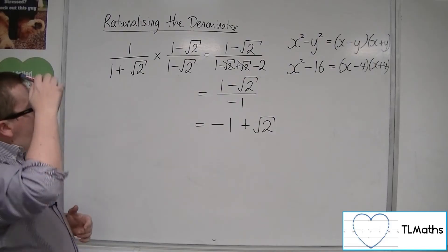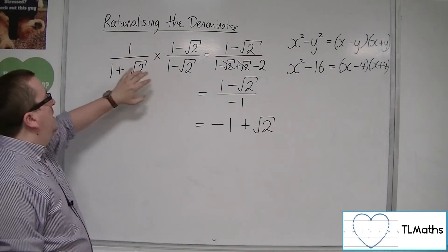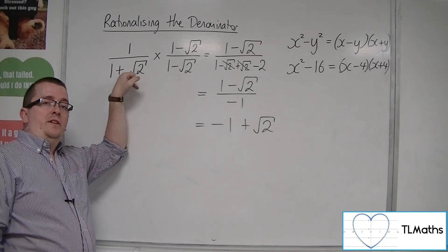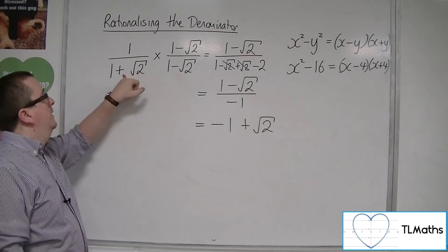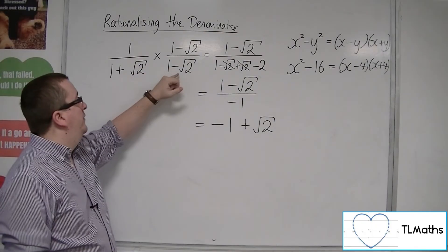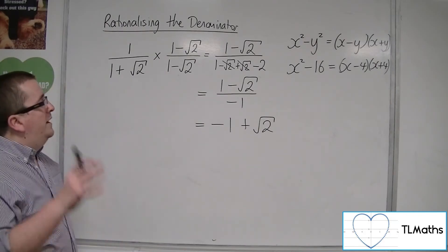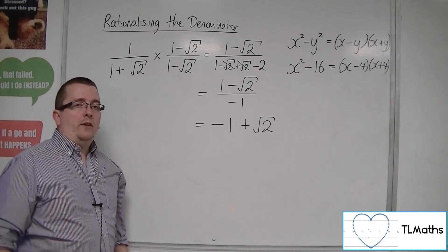So we can use this technique of multiplying top and bottom by the same thing, but the middle sign changed. Changed from a plus in this case to a minus, or if this was a minus, we'd change it to a plus. And we're going to look at some more examples of this in the next video.